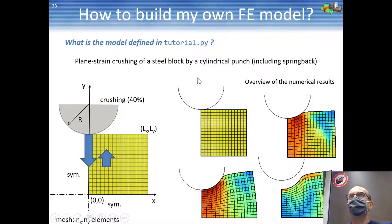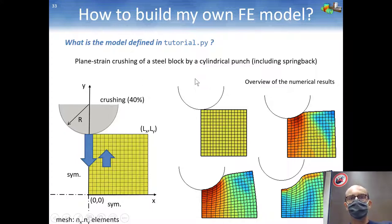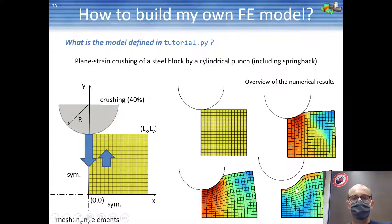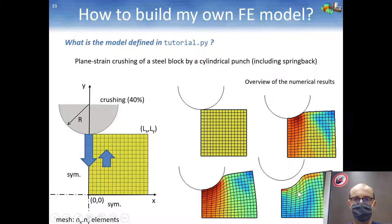So what is the model defined in tutorial.py? It's the plane-strain crushing of a steel block by a cylindrical punch. It includes what we call spring-back — the release of stresses when the tool is removed and the elastic recovery of the material when everything is released.